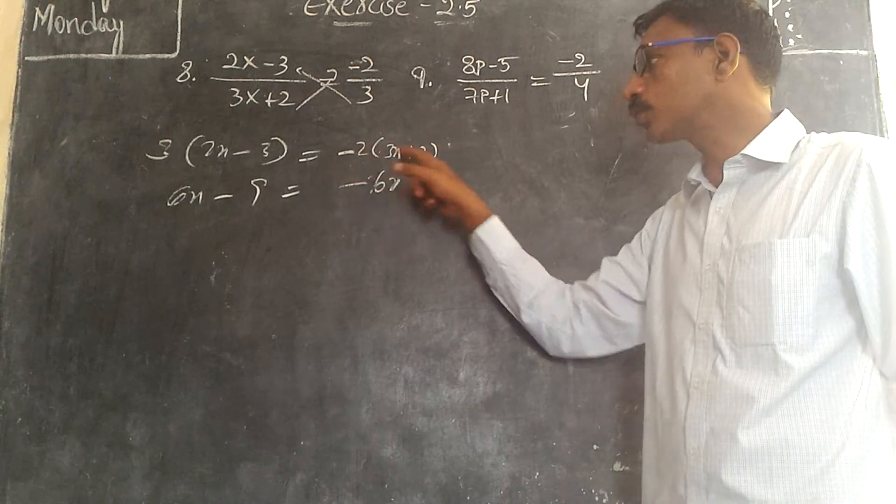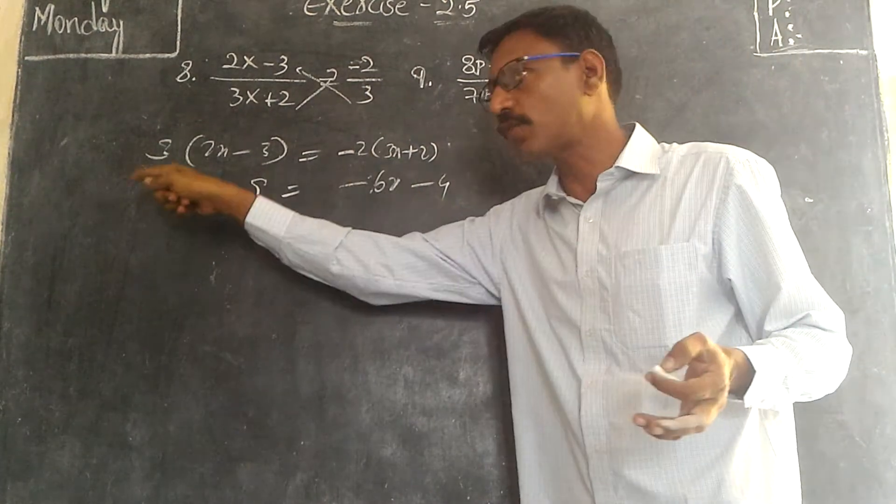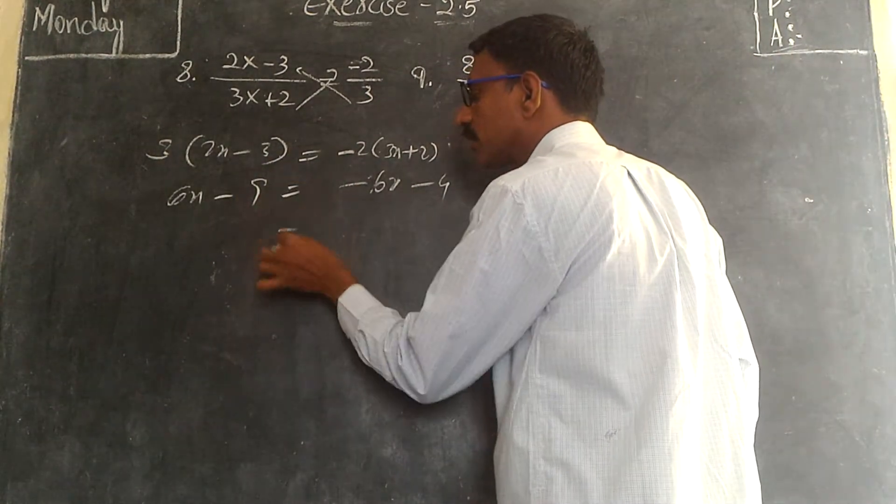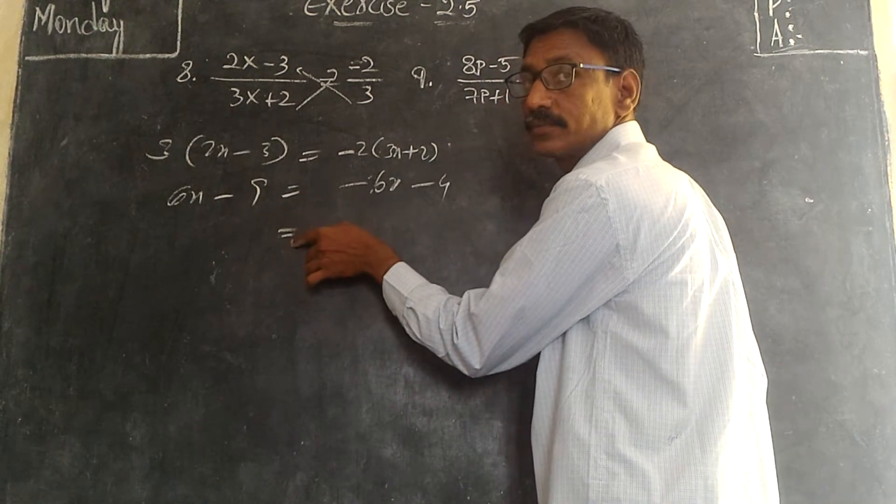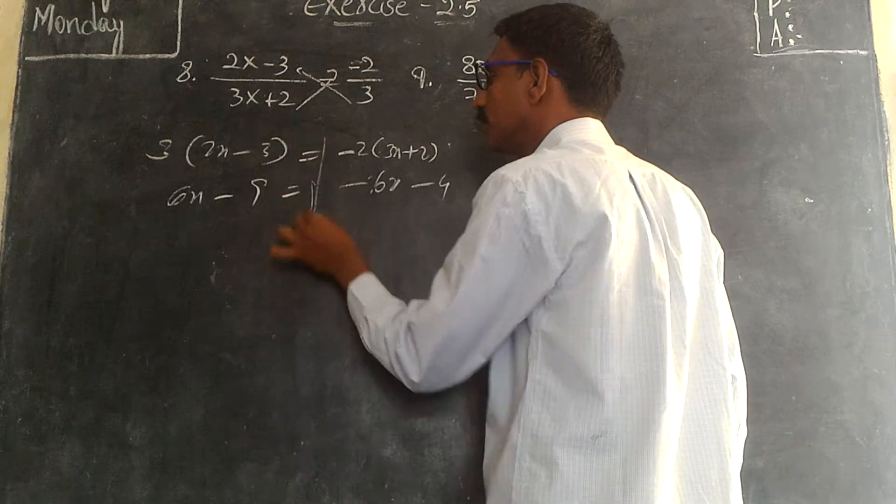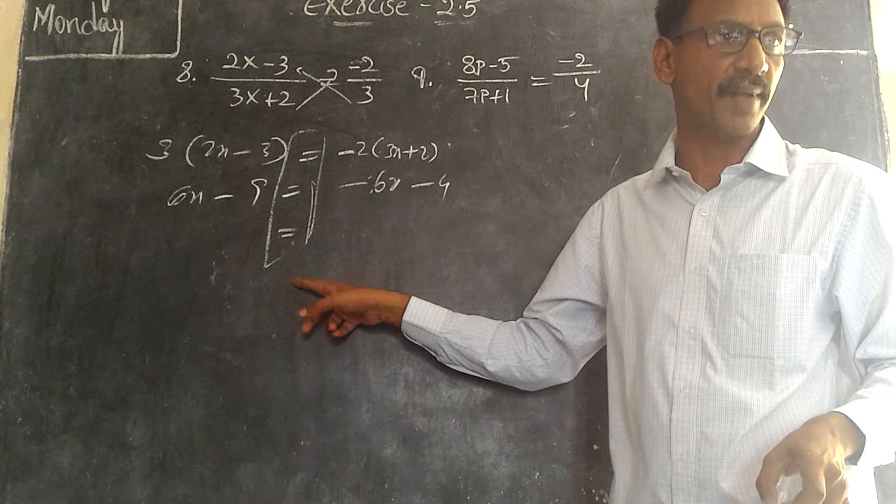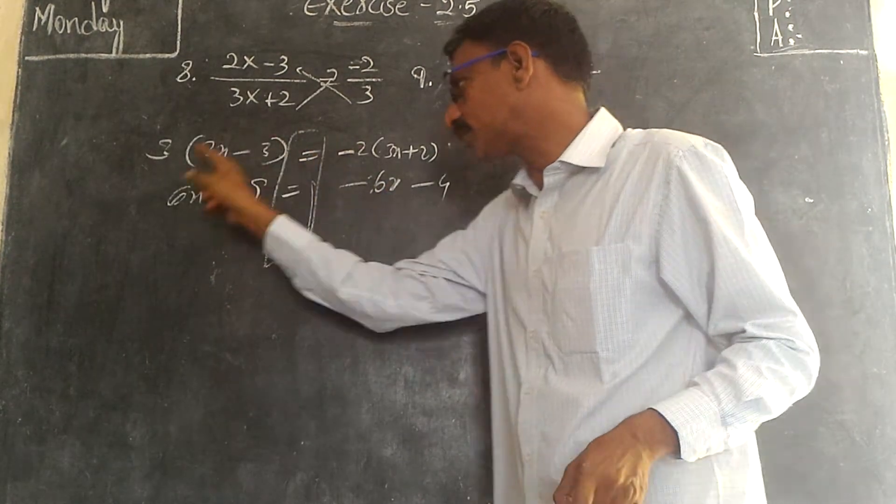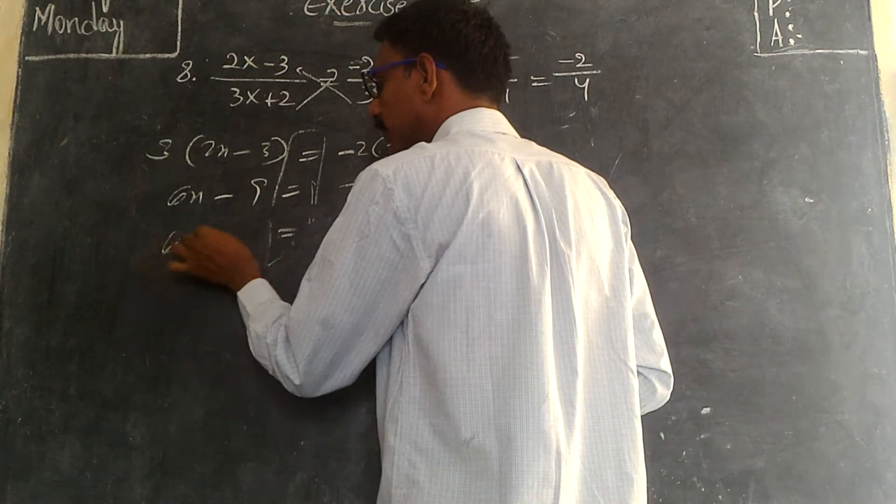Now separate the variables. Minus 6x will go to that side, plus. Minus 2, plus 2, equal to minus 4. These three should be in line, this should be in parallel. So minus 6x will go to that side, plus 6x.